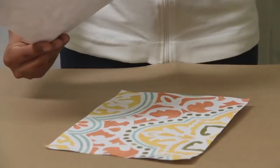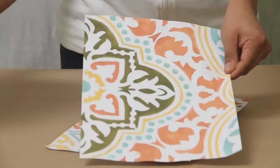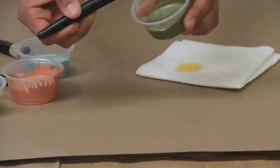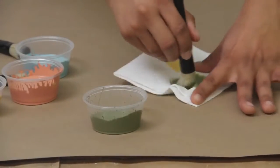We recommend doing some small samples with different color ideas on paper first. Once you know the look you want, start by stenciling your dominant, the most used color first.